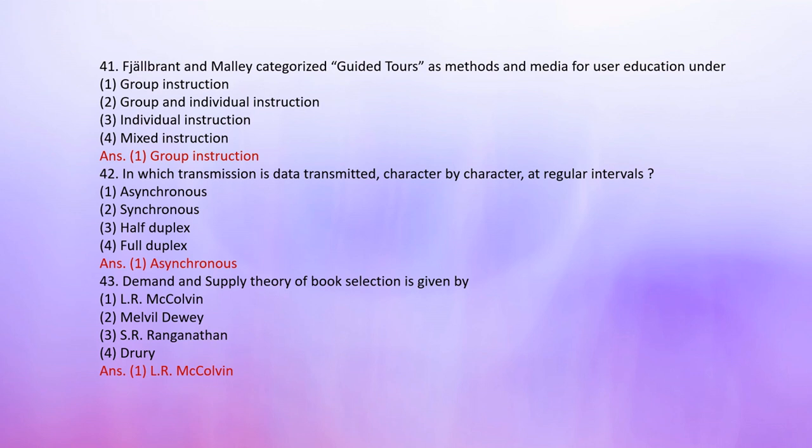Number 42: In which transmission is data transmitted character by character at regular intervals? 1. Asynchronous, 2. Synchronous, 3. Half-duplex, 4. Full-duplex. The correct answer is 1: Asynchronous.